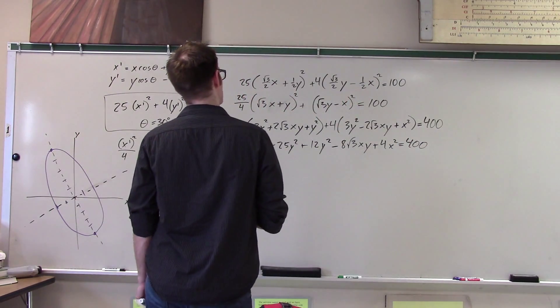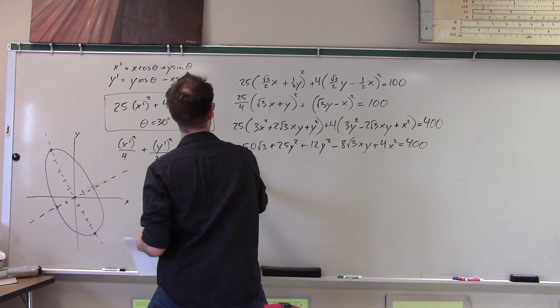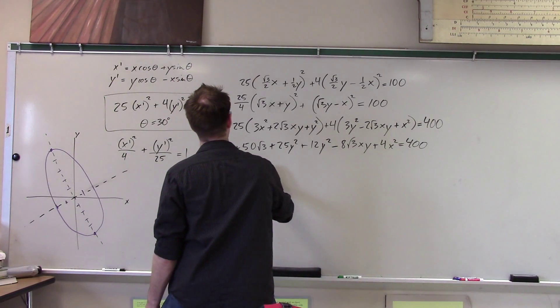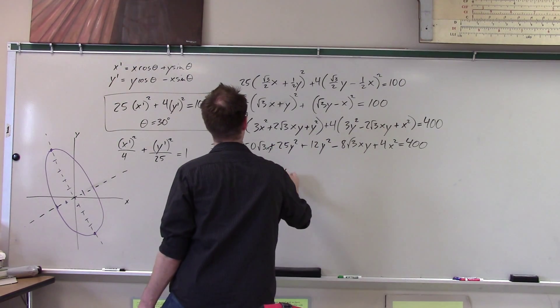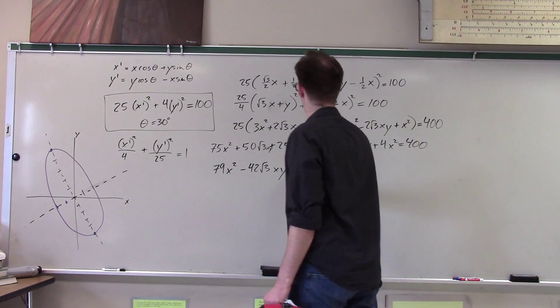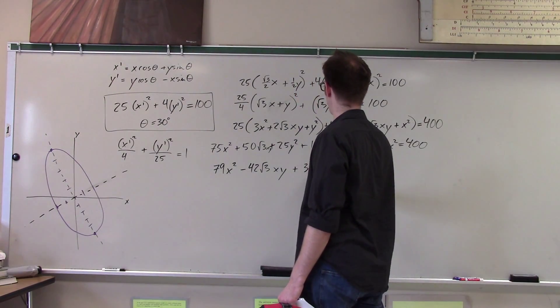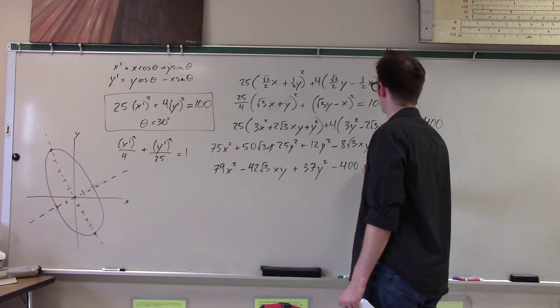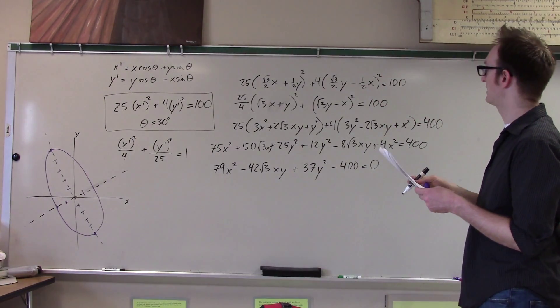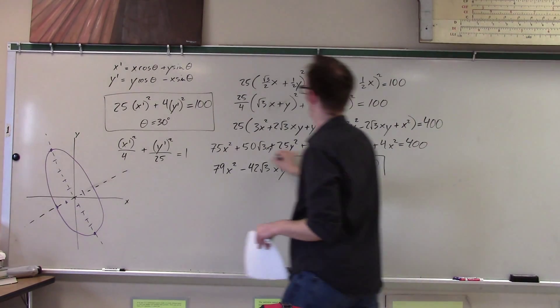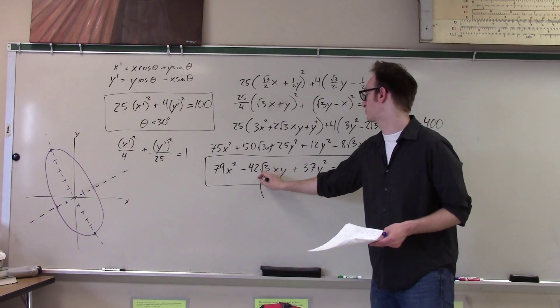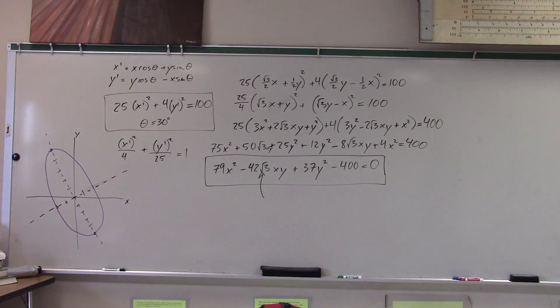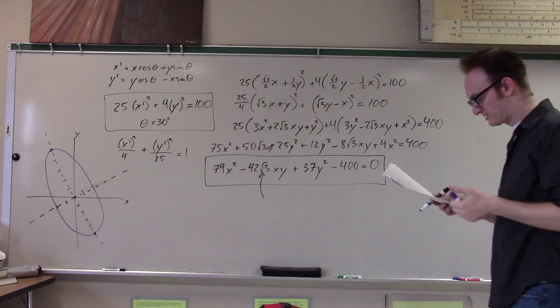Okay. So putting this all together, I end up with 79x squared minus 42... So I get 2 root 3xy plus 37y squared, and that's it. Minus 400 equals 0. And that is exactly what's on my paper. Okay. And notice the existence of this dreaded xy term. Yeah, it's terrible. Yeah, it's terrible.